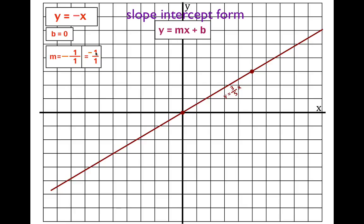Starting once again at the origin — our y-intercept is zero — when we rise negative one, we actually move down. A negative rise means moving down, so we go down one. Then the run is positive, so we move to the right, and we place the second point there. Draw the line through those two points: that is y equals minus x. Notice that y equals three-fifths x has a positive slope and slopes up, while y equals minus x has a negative slope and slopes down.